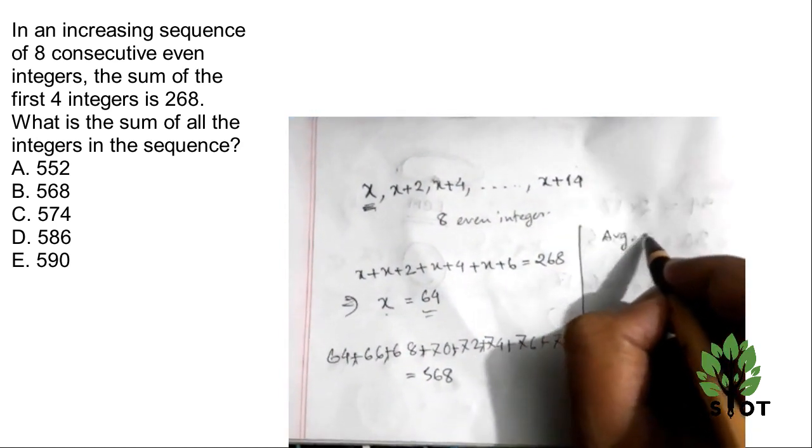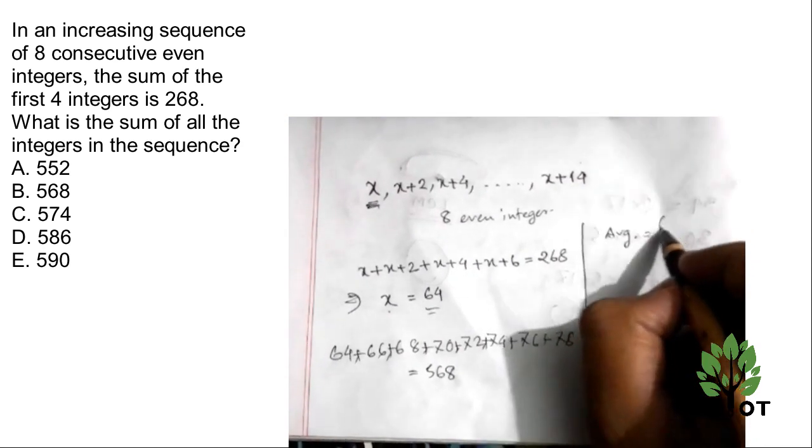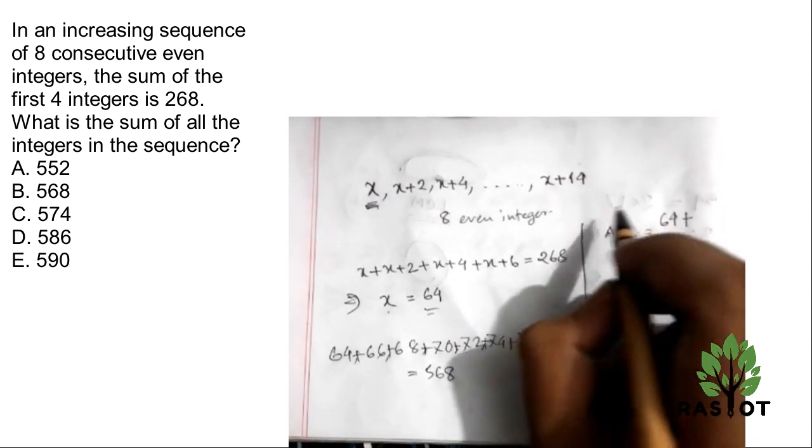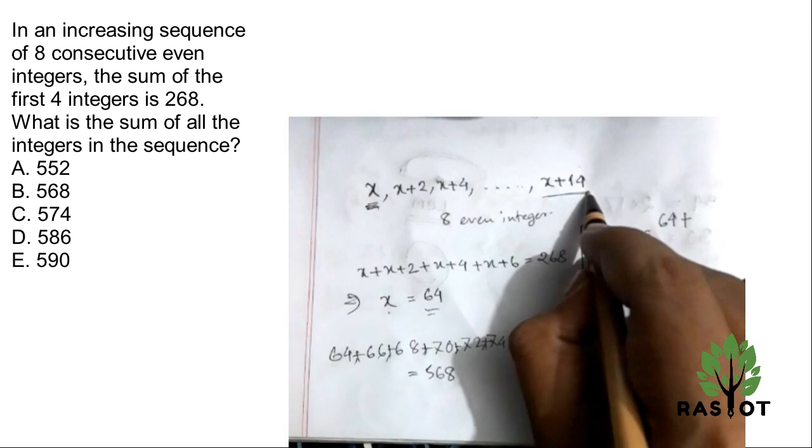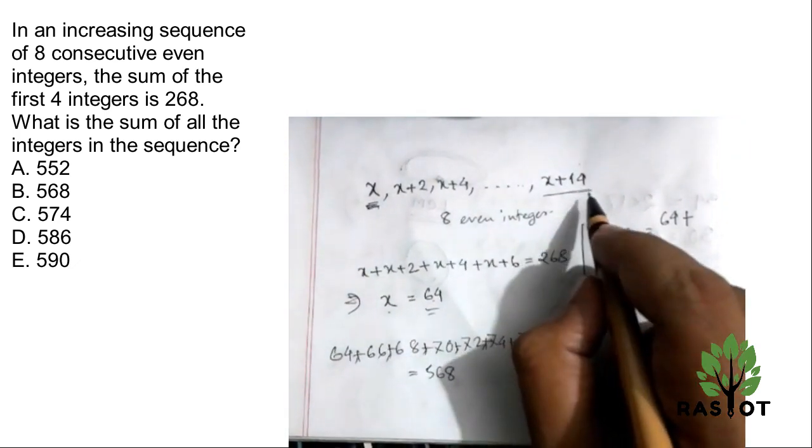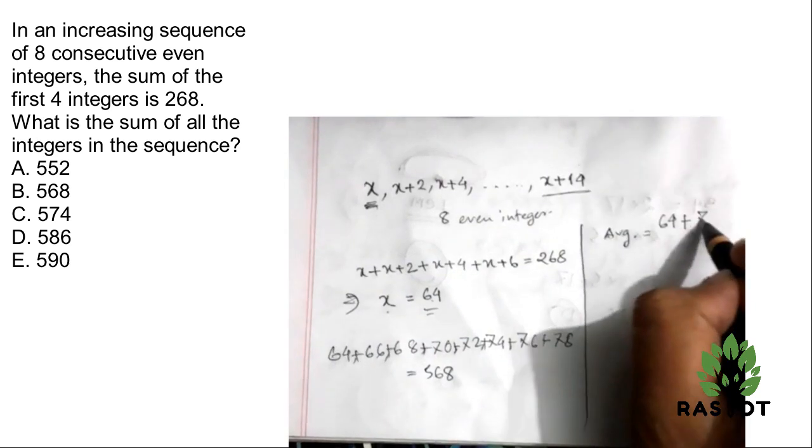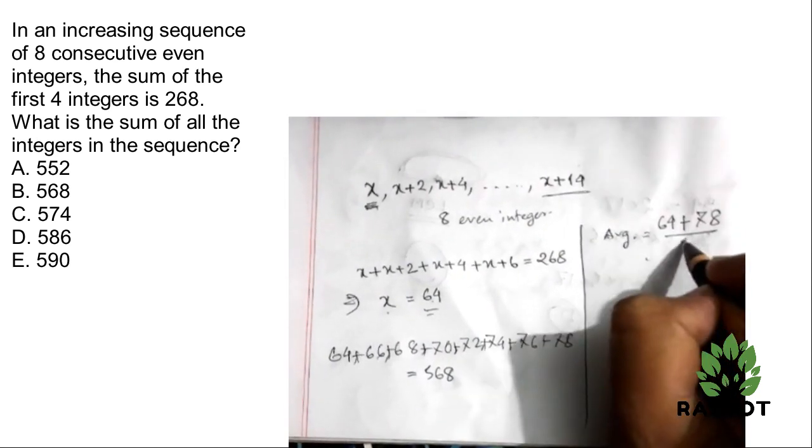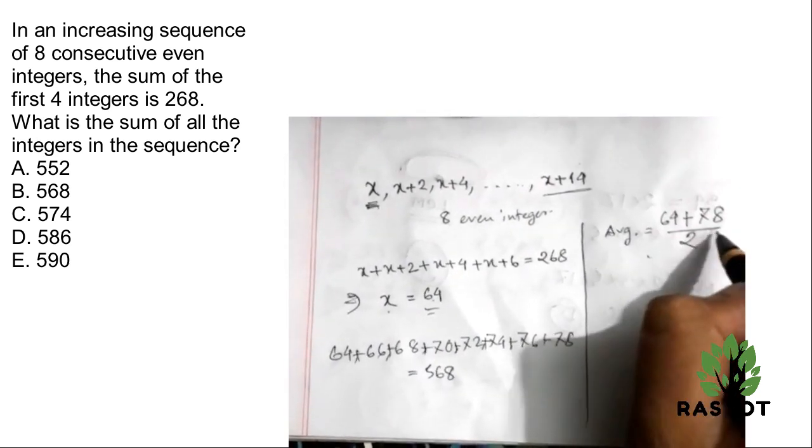The consecutive number average is, what is the average? First is 64 plus the last one, x plus 14, 64 plus 14, that is 78, divided by 2. This is the average.